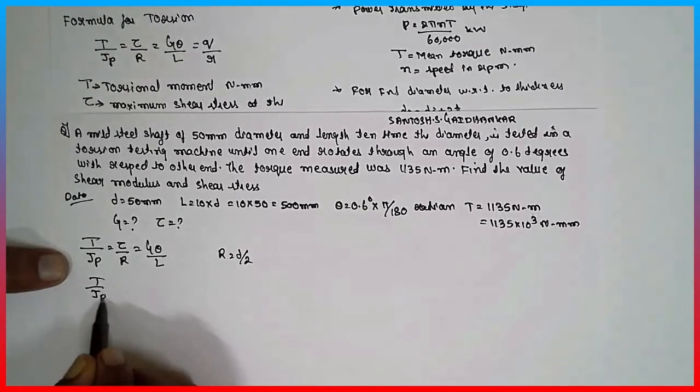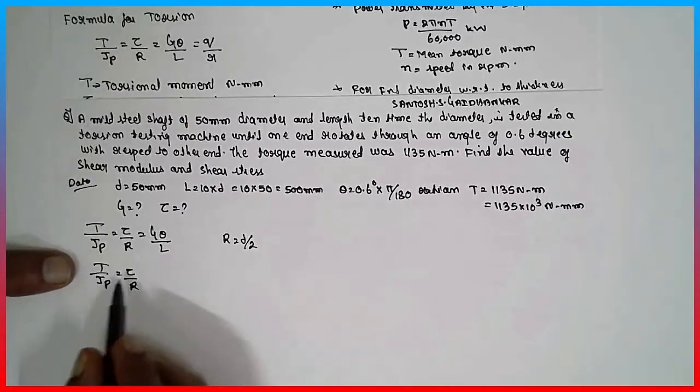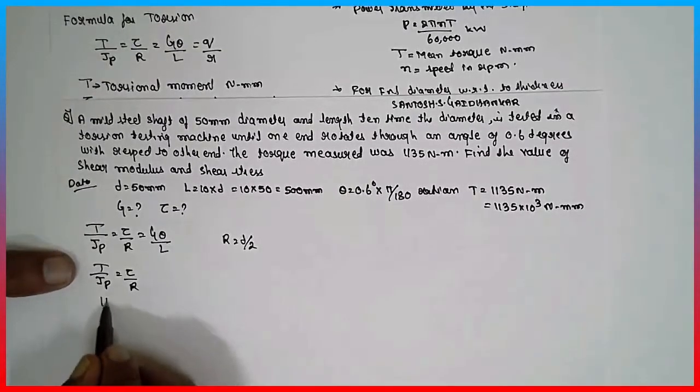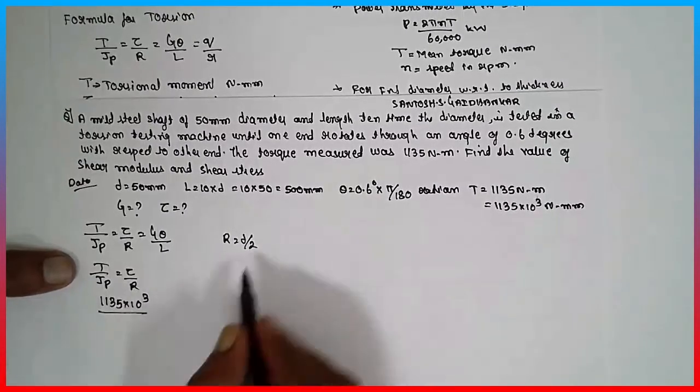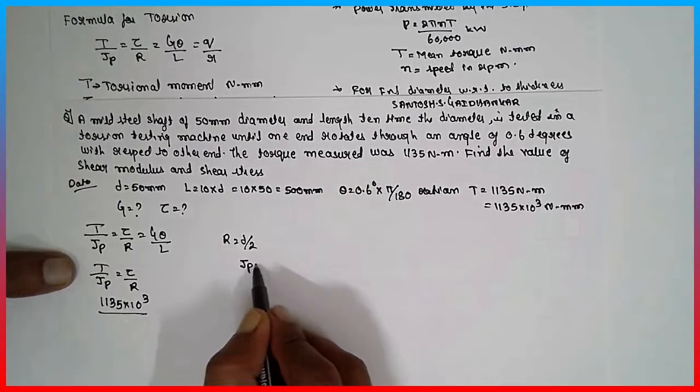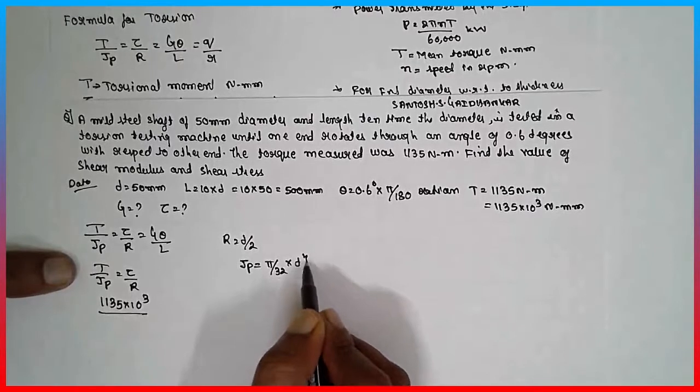T divided by Jp is equal to tau divided by R, where T is 1135 into 10 raise to 3. Polar moment of inertia for solid, Jp is equal to pi by 32 into D raised to 4, this is the formula.